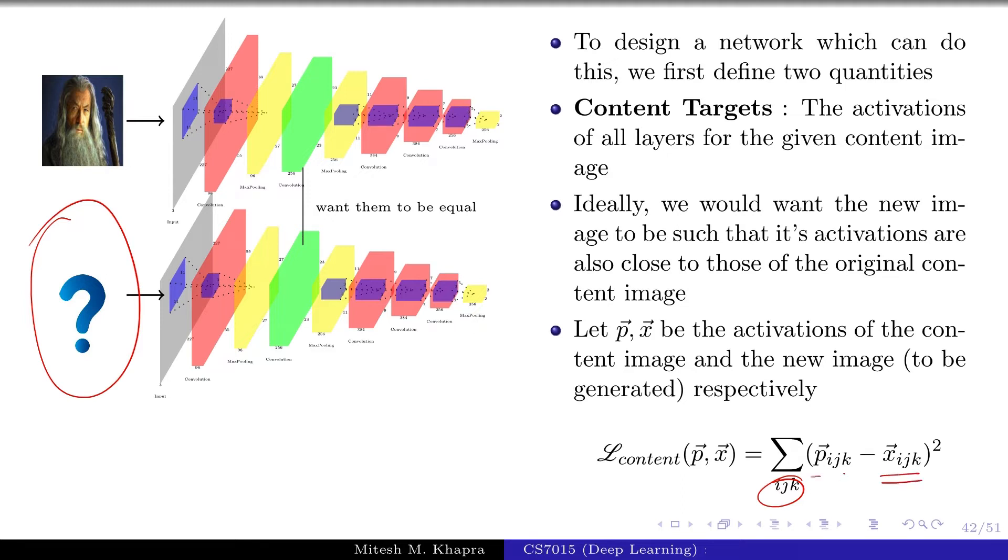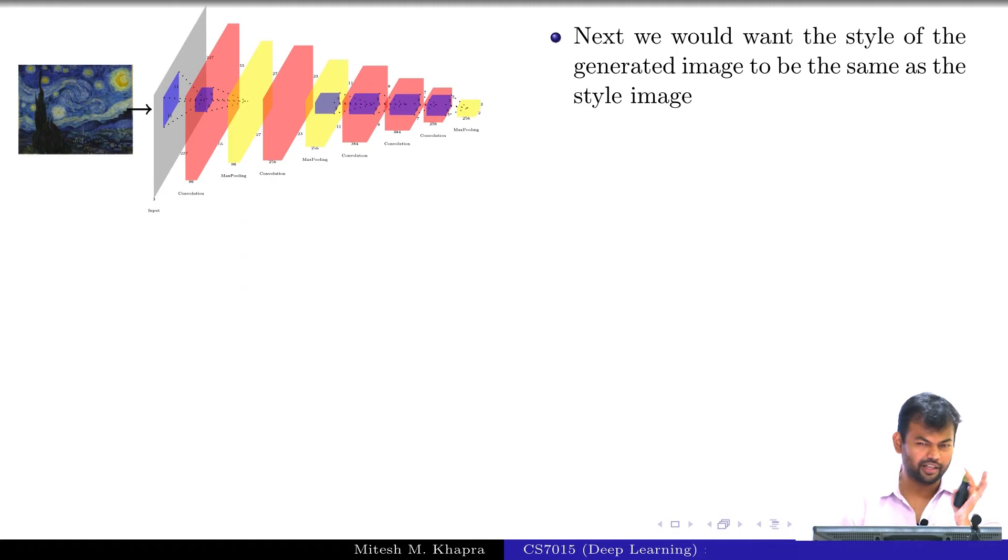So X is my original image and P is the new image which I am going to create. Now, here is where there is a bit of leap of faith: we want the style of the generated image to be the same as the style image. I gave you one content image and one style image. For content, the loss function is clear.